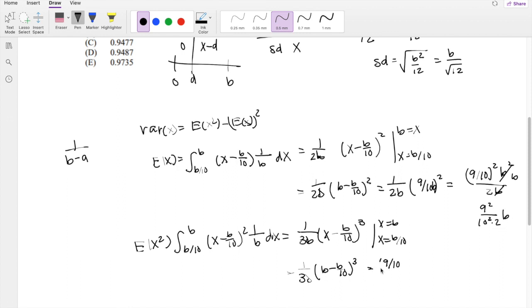So this one right here is similarly, 9 over 10 cubed over 3B, and this is B cubed, by the way. So one of the B's cancel out. So you get 9 over 10 cubed times B squared over 3.